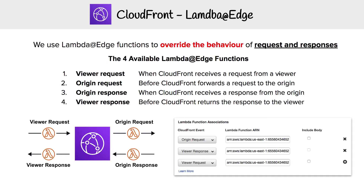We have four trigger types available to us: we have the viewer request, the origin request, the origin response, and the viewer response.